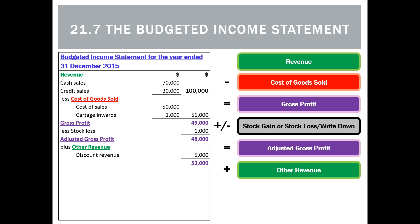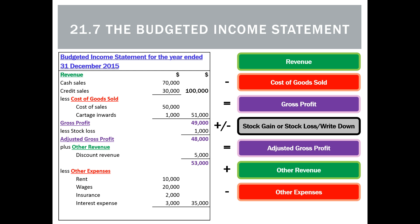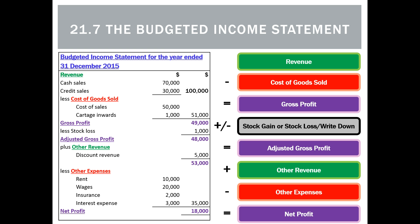We'll then budget for any other revenues — such as discounts, commissions, or interest revenues — and lastly we'll budget for any other expenses, finishing with a budgeted net profit.